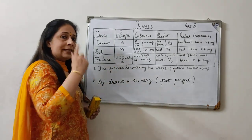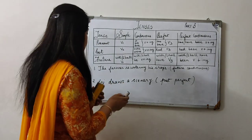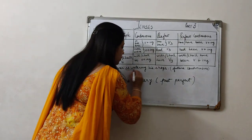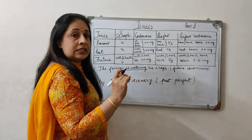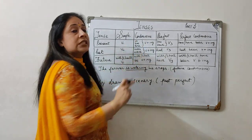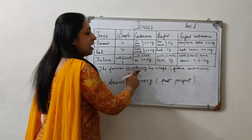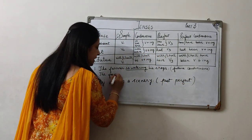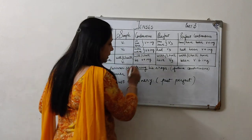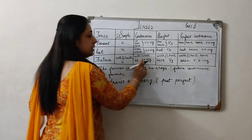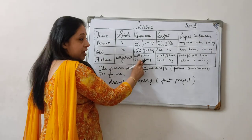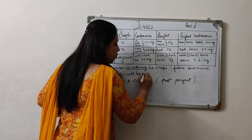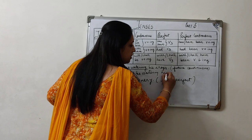I have two questions ready for you. Let us quickly change from one tense to another. The first sentence is: 'The farmer is watering his crops.' Here 'is watering' — is plus verb ing — so this is present continuous tense. We have to change it into future continuous. The farmer... future continuous is this. So we write: 'The farmer will be watering his crops.'